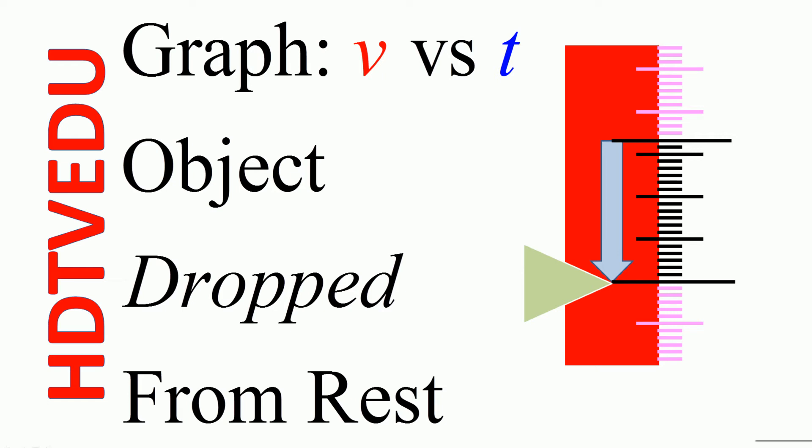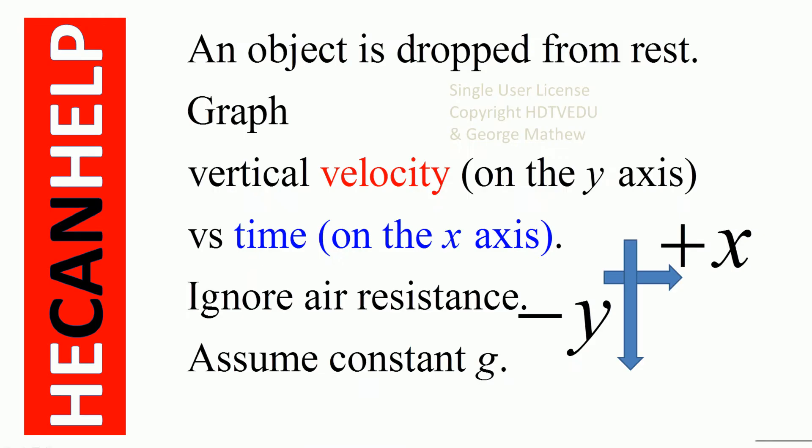Graph vertical velocity versus time. An object is dropped from rest. Graph vertical velocity on the y-axis versus time on the x-axis. Ignore air resistance and assume constant acceleration due to gravity.